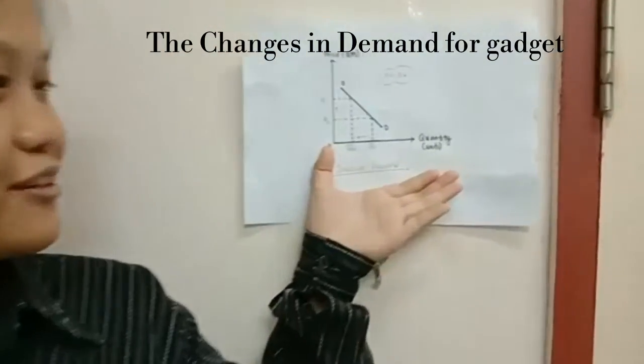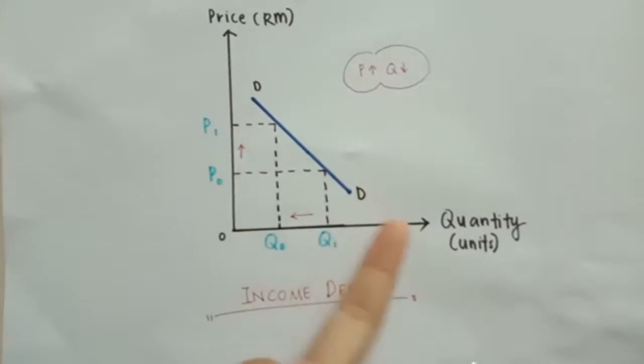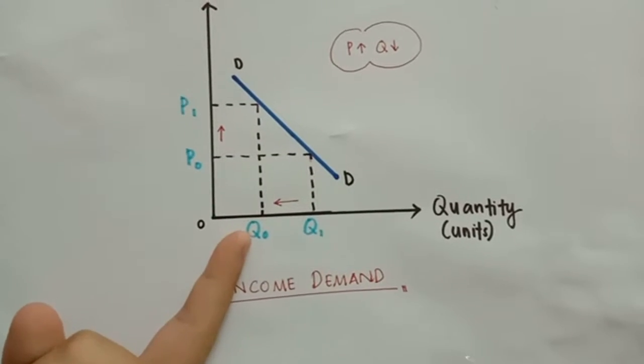This figure shows the demand curve for gadgets. When the price is increased, the demand will decrease and it will affect the quantity demanded for the goods.